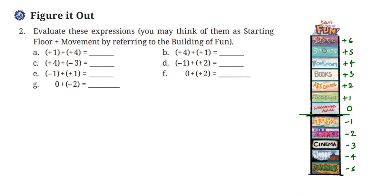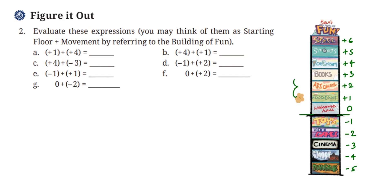They ask us to use the starting floor and the movement. The first number represents your starting floor, and the second number represents the movement — how many floors you're moving. For example, the first question: plus one plus four. We start at the first floor, and go four floors up. One, two, three, four — we reach sports, which is plus five. So the answer is plus five.